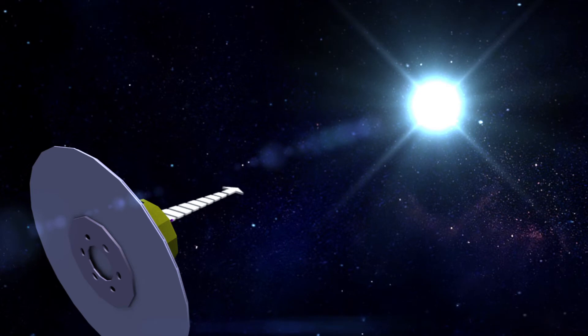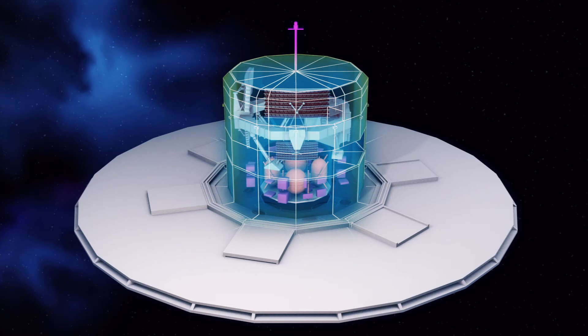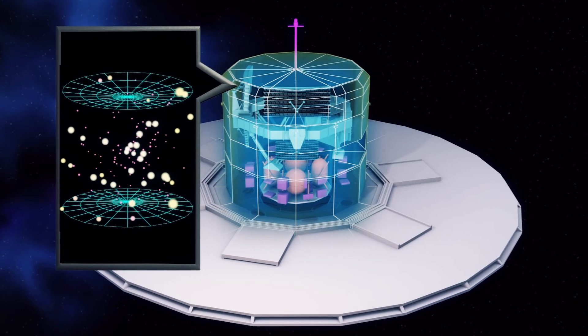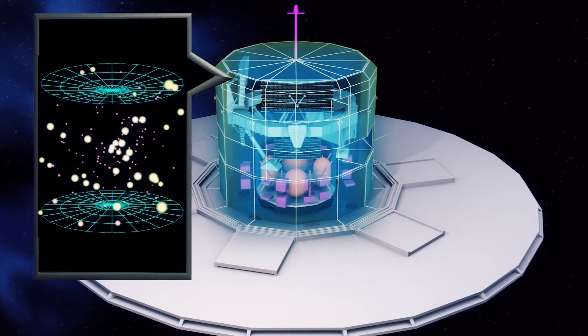From there, Gaia will monitor each of its target stars about 70 times over a five-year period. Using its two optical telescopes and scientific instruments, Gaia is able to create a three-dimensional map of the galaxy and beyond, with precise locations of the stars as well as their velocity and luminosities.